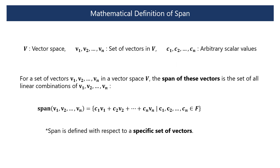Let's see the mathematical definition of span. We consider a set of vectors in a vector space V, and denote each vector as V1, V2, ..., Vn, with arbitrary scalar values C1, C2, ..., Cn. For a set of vectors V1, V2, ..., Vn in a vector space V, the span of these vectors — denoted as span(V1, V2, ..., Vn) — is the set of all linear combinations of V1, V2, ..., Vn. Note that span is defined with respect to a specific set of vectors.